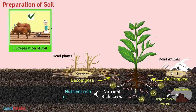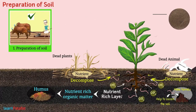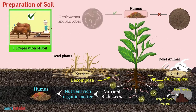These organisms decompose organic matter such as dead plants and animals into nutrients that plants can absorb and use. The nutrient-rich organic matter present in the soil is called humus. It gives a black color to the soil. Without these organisms, humus could not be produced, and so they are the true friends of the farmer.